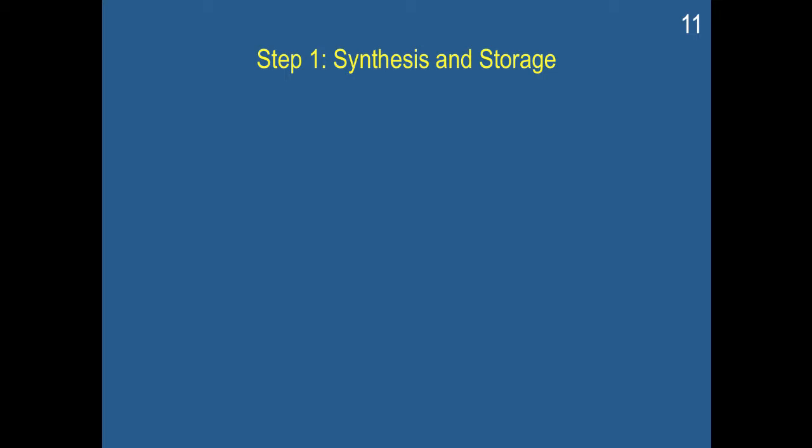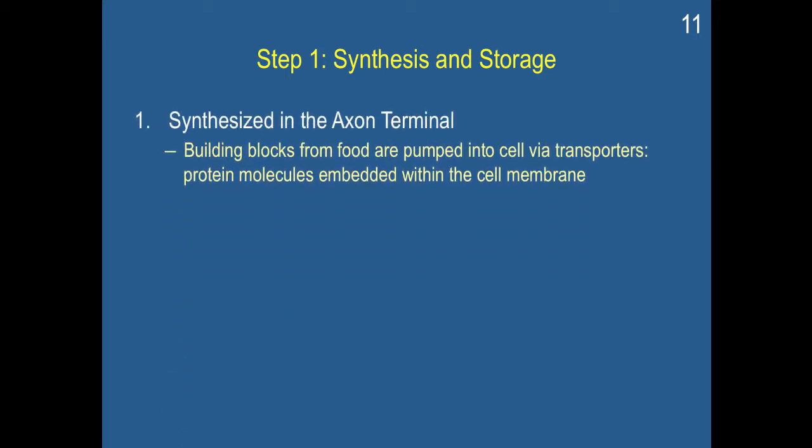Step one is synthesis and storage. If neurotransmitters are synthesized in the axon terminal, building blocks from food are pumped into the cell via transporters — protein molecules embedded within the cell membrane. The food that we eat forms the building blocks for constructing the neurotransmitters needed for cellular communication. This is one of the principal reasons why what we eat can affect our behavior: insufficient nutrients can cause a shortage of neurotransmitters, affecting mood and behavior.